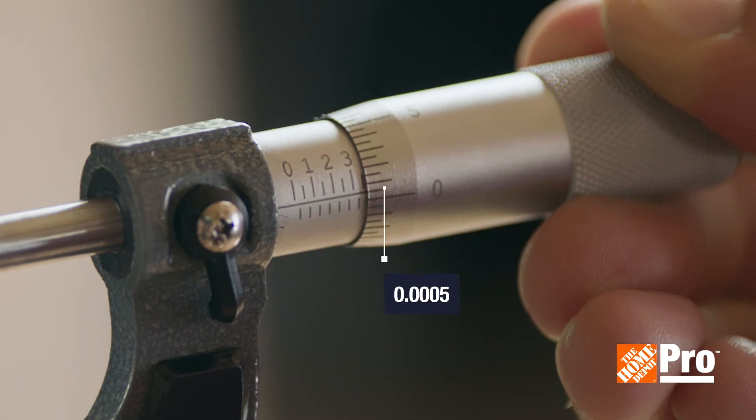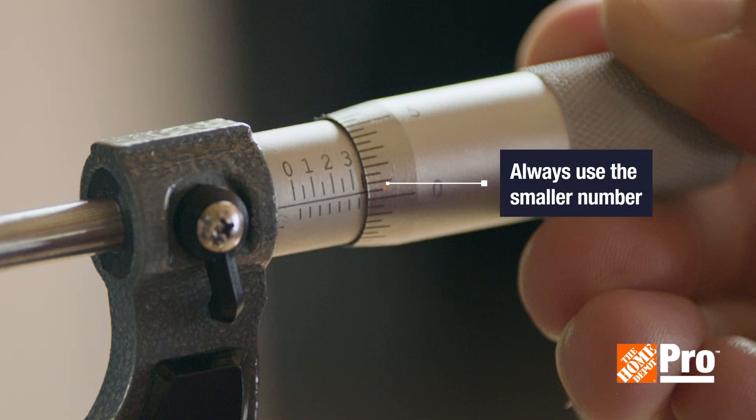Our thimble is landing at the first shorter mark after zero, so that gives us 0.0005. If the reading line lands between two numbers on the thimble, always use the smaller number.